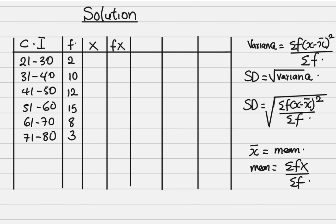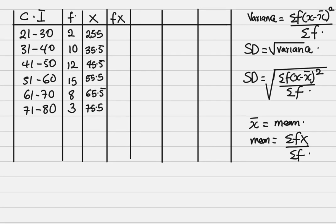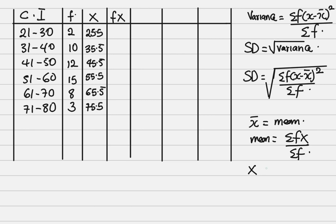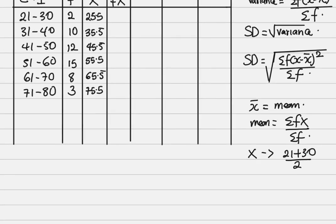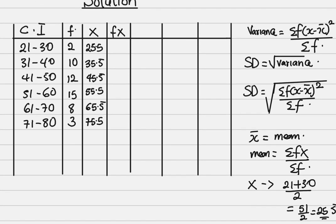So we calculate: 21 plus 30 divided by 2 gives 25.5, then 35.5, 45.5, 55.5, 65.5, and 75.5. To be clear, for the first interval it is 21 plus 30 all over 2 — that is the upper and lower class interval divided by 2 — giving 51 over 2, which is 25.5.